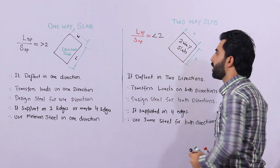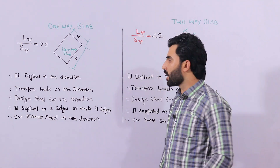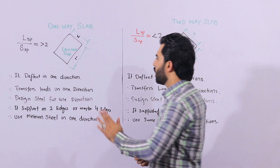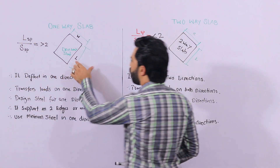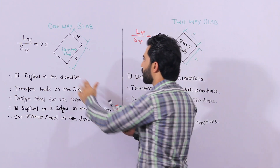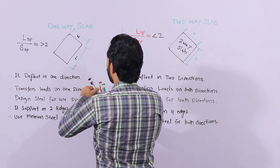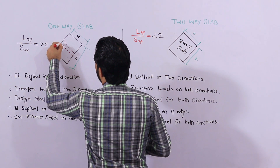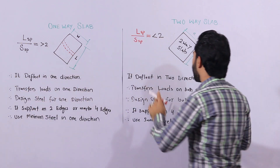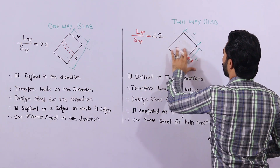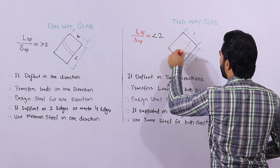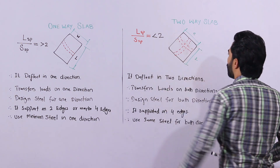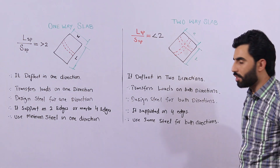So this is the simple definition of one-way and two-way slab. Now let me guide you for its deflection directions. In one-way slab, it deflects in one direction — like this. So therefore it deflects on one direction. And in two-way slab, it deflects in two directions — therefore it's called a two-way slab, with deflection chances on both directions.